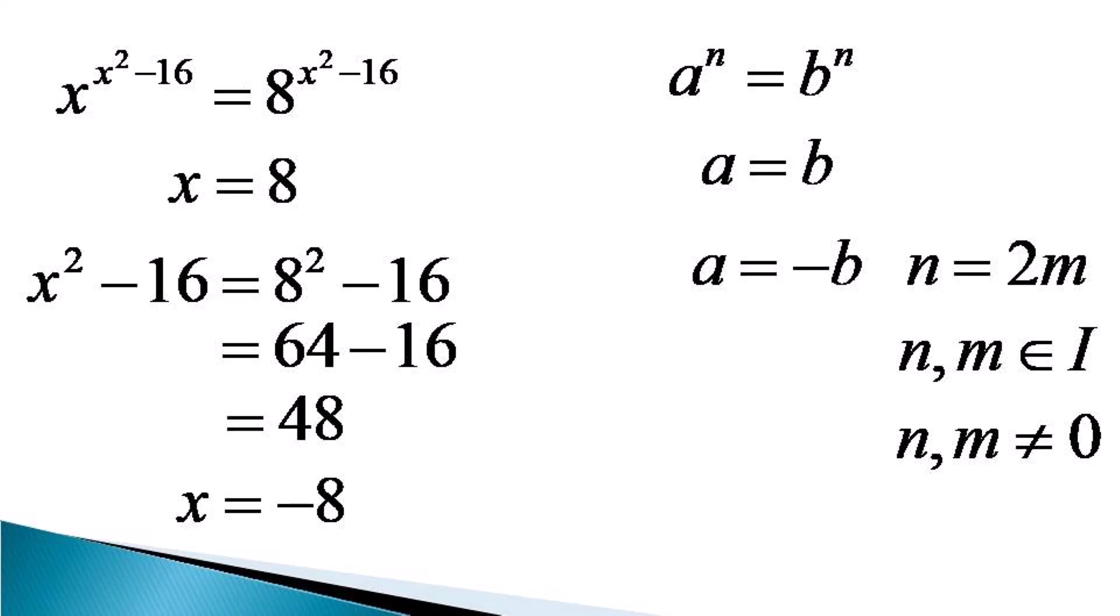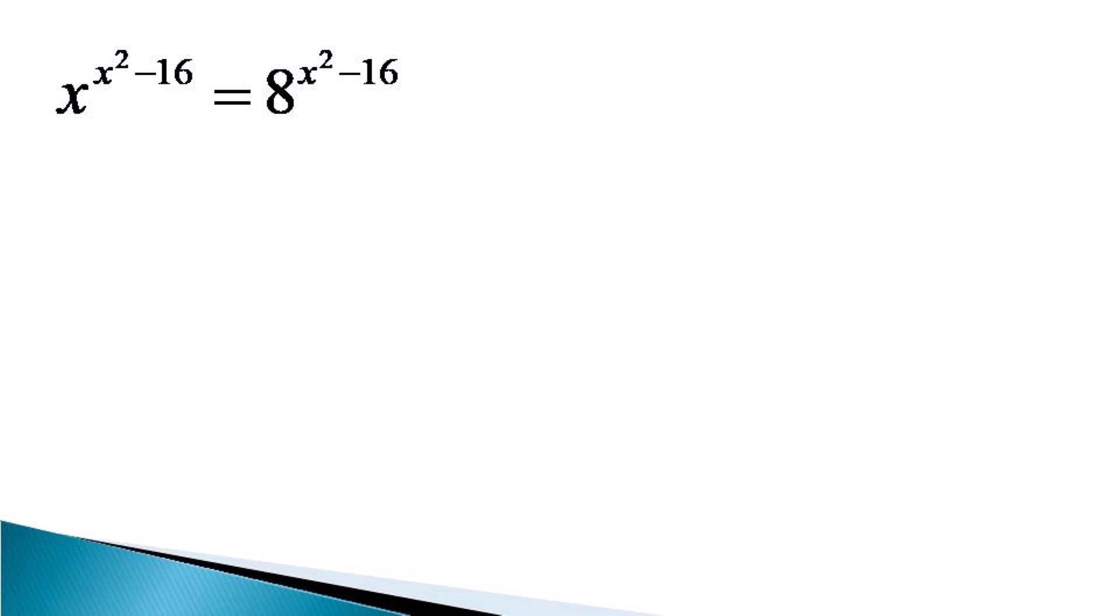Now let us proceed for other solutions. The other solution for a raised to the power n equals b raised to the power n can be for n equals 0, where both a or b are non-zero values. Both sides become unity for n equals 0.